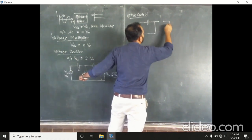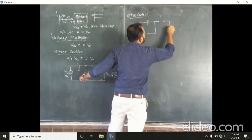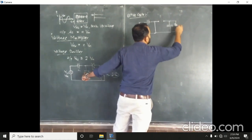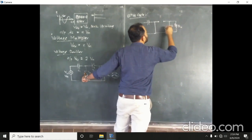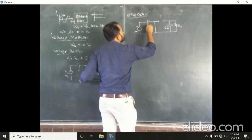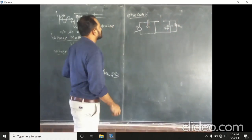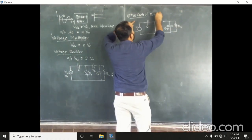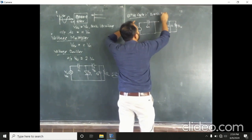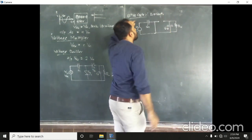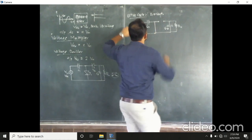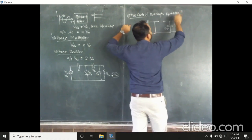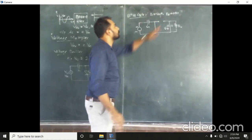Here we are having the capacitor C2, across which we are connected the load resistance RL. During the positive half cycle, D1 is replaced by a short circuit — that is, a wire with zero resistance — and D2 is replaced by an open circuit, so the circuit does not conduct through that part.